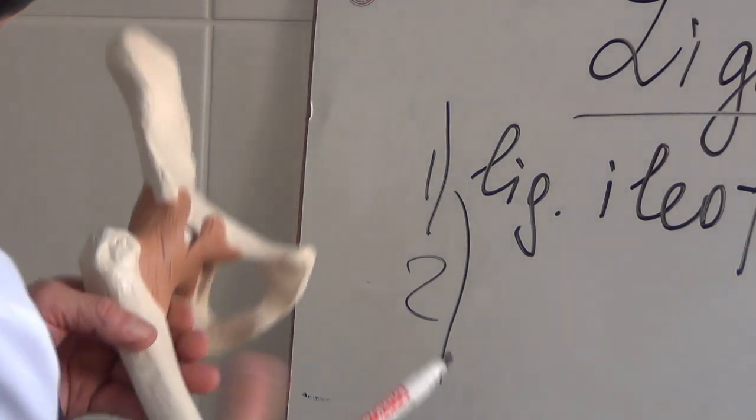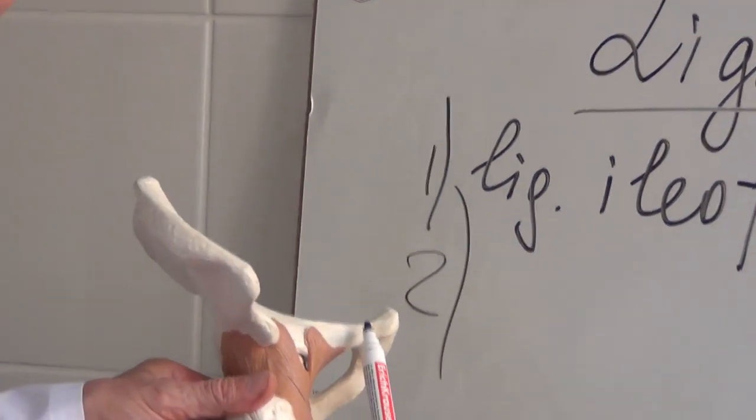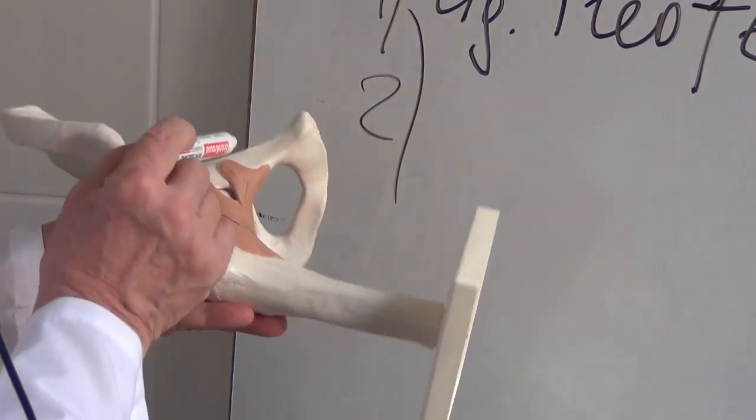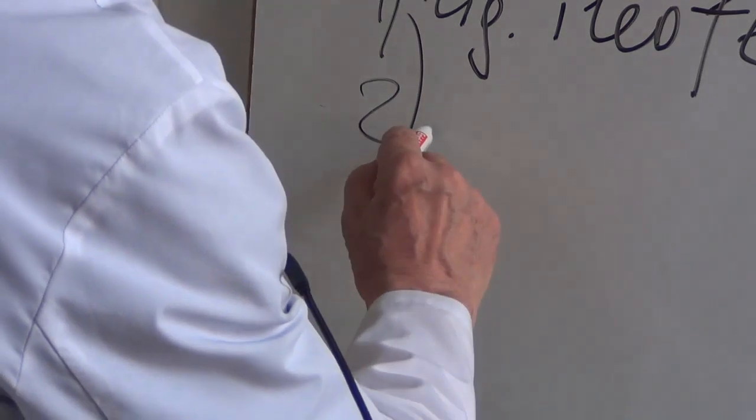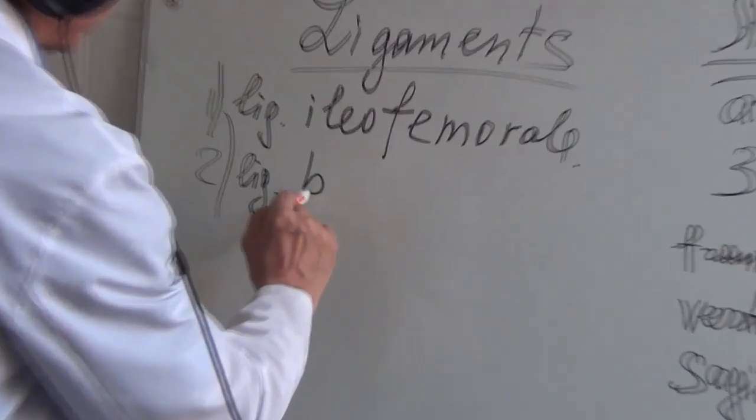Second is ligamentum pubofemorale. You can recognize this bone. It's os pubis. So ligamentum pubofemorale.